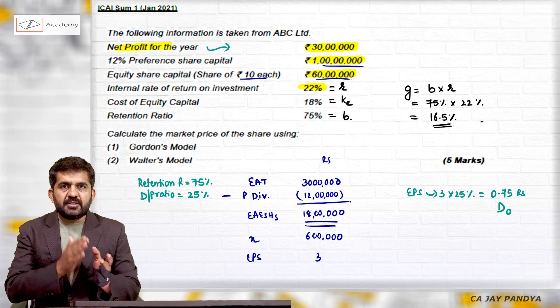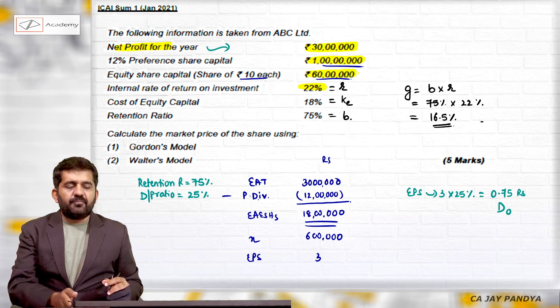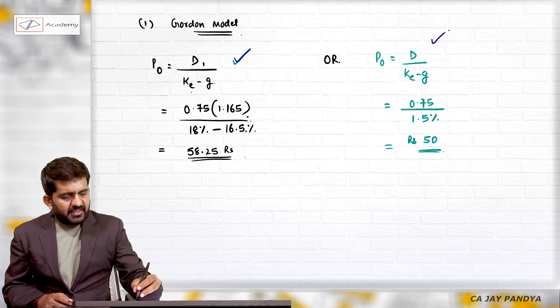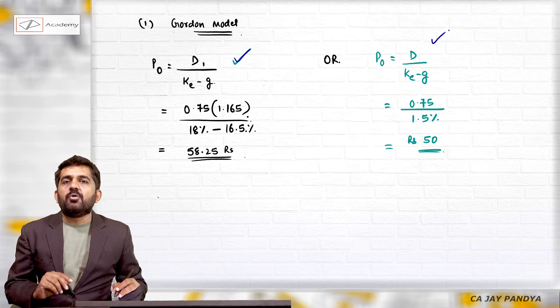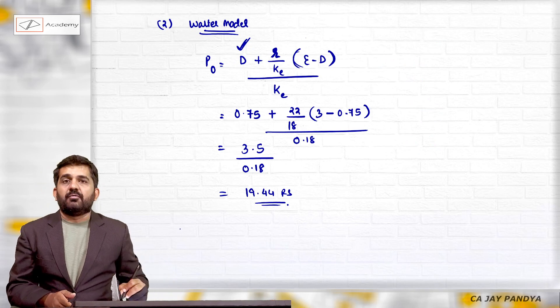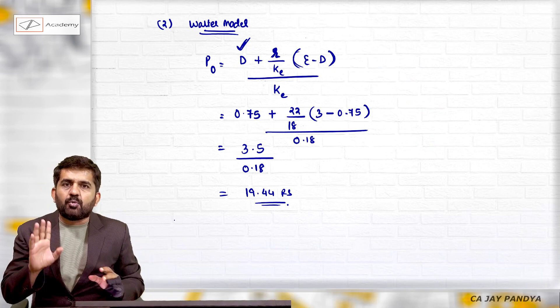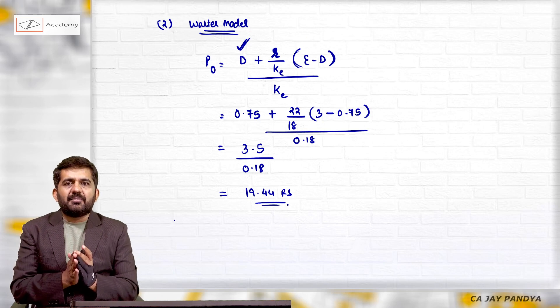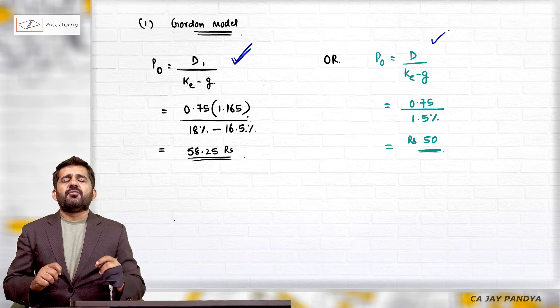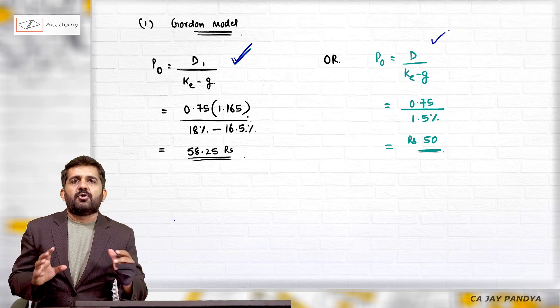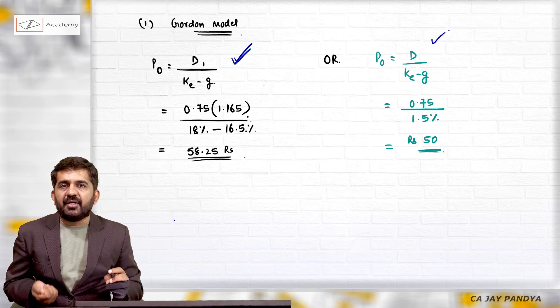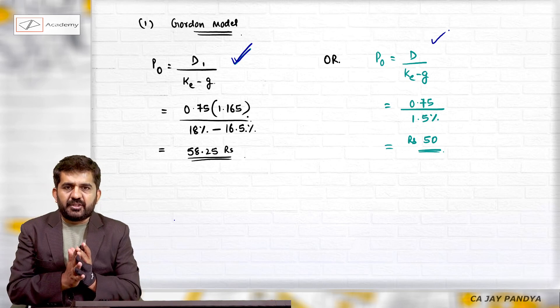Please understand what happens in this type of question is students get confused whether I should find out this answer or that answer. In Gordon model, always take D1. Try and do only this answer. And in Walter model, you can directly solve with D - don't try to find out D1 as far as Walter model is concerned. Now there is a logical thing behind it. You can find out Gordon by both methods, but for the examination, if the question is asked, don't get confused about which answer you should write down. Always in Gordon model take D1. In Walter model, you can do with D and solve the question.